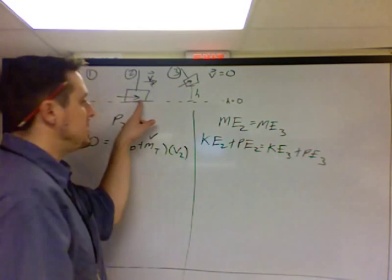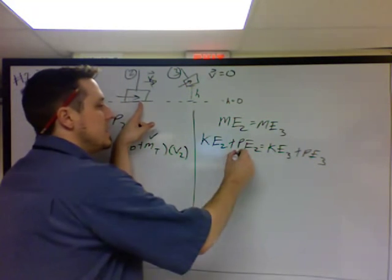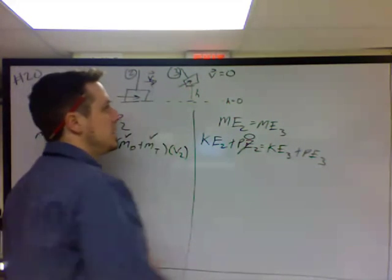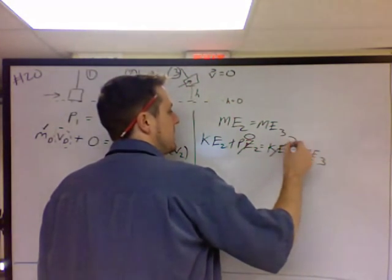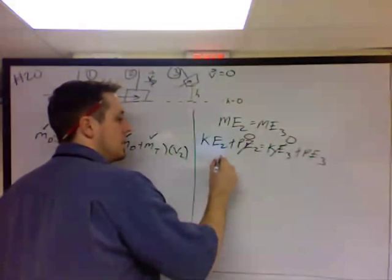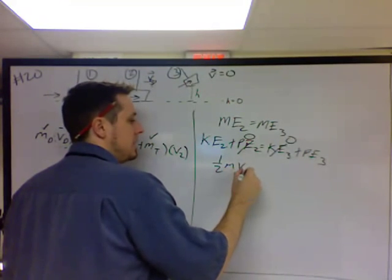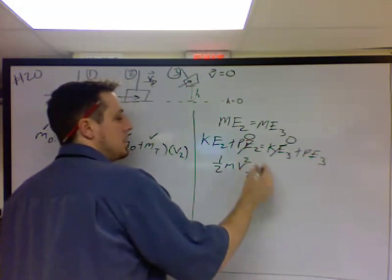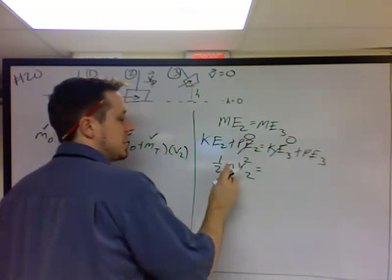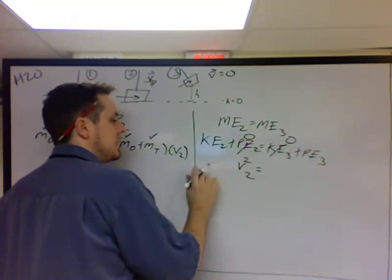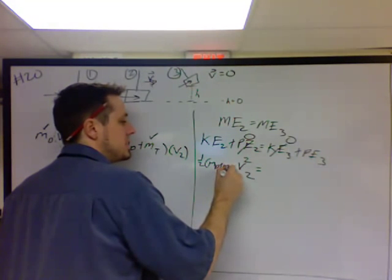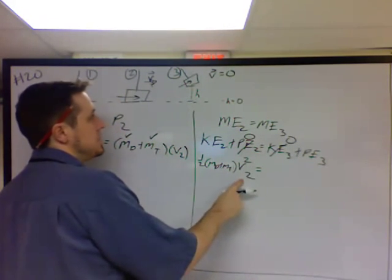So once again, here at the bottom, it's moving, but it has no height. So the potential energy at 2 is zero. At the top, it's not moving. So it doesn't have any kinetic. Or 1 half M, the velocity at 2 squared, equals the mass. And this is the combined mass. So I should literally be writing this as mass of the dart plus mass of the target times V2 squared.